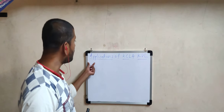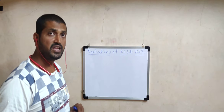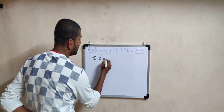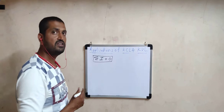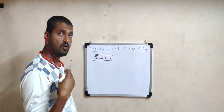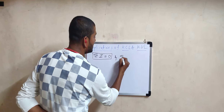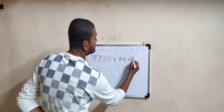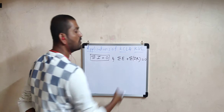Let us start with the application part of Kirchhoff's current law and Kirchhoff's voltage law, which we studied in the previous lecture. As per KCL, the algebraic sum of all currents at any junction is always equal to zero. To use this law we consider two sign conventions: incoming currents are positive and outgoing currents are negative. Similarly, Kirchhoff's voltage law states that the algebraic sum of electromotive forces and the algebraic sum of the product of current and resistance in any closed loop is always equal to zero.